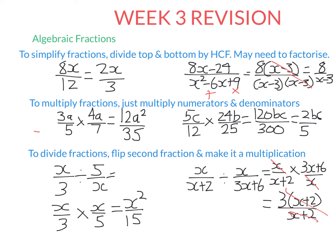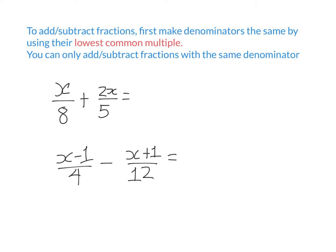Now let's look at adding and subtracting fractions. You can only add or subtract fractions when their denominators are equal. If they're not equal, you must make them equal first. Here, I need to find the lowest common multiple of 8 and 5 — the lowest number divisible by both — which is 40. To get from 8 to 40, I multiply the denominator by 5, and by the golden rule, I must also multiply the top by 5, giving 5x on top.